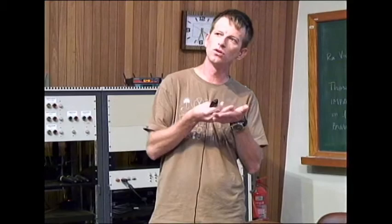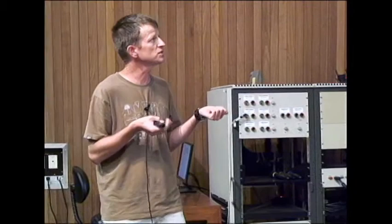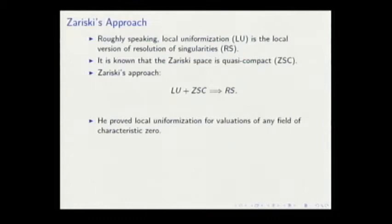Hence I can take a covering. Since this space is quasi-compact I can extract a finite subcovering. Hence we only have to glue finitely many solutions. So this was his approach with two steps: first prove local uniformization, then glue finitely many solutions.